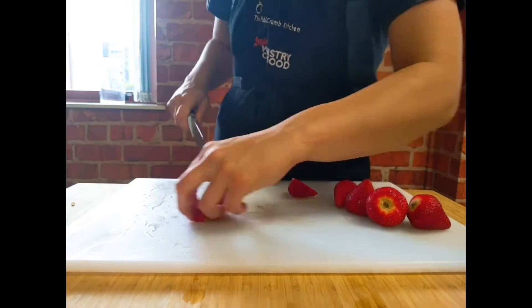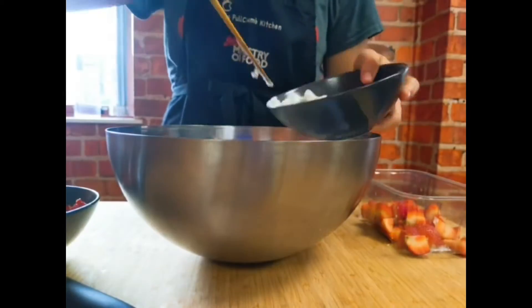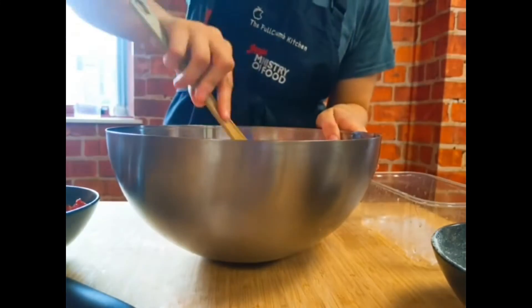Half and quarter the rest of the strawberries. Mix two thirds of the meringue and the rest of the ingredients together in a large mixing bowl.